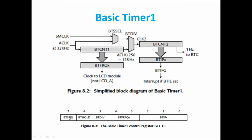To control Basic Timer 1, we have the BTCTL control register, which contains: BTS select, BT hold, BTDIV, BTRFQX, and BTIPX bits. BTS select is the select line of the 2-to-1 mux — if it is 0, it selects SMCLK; if it is 1, it selects ACLK. This chooses the clock source for BTCNT2. BT hold (basic timer hold) stops the basic timer when set to 1.